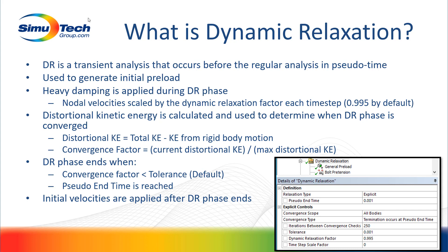There are two ways to decide that a dynamic relaxation phase has ended. The default is when the convergence factor gets below some tolerance, which you specify under the details of dynamic relaxation — the default is 0.001, meaning 0.1% current distortional kinetic energy compared to maximum. The other option is to use the pseudo-end time. By default this setting doesn't do anything, but if you switch the convergence type to termination occurs at pseudo-end time, the dynamic relaxation phase will run until it reaches the pseudo-end time or until the convergence factor becomes less than the tolerance.